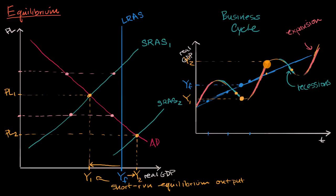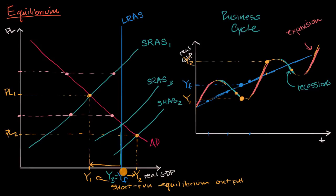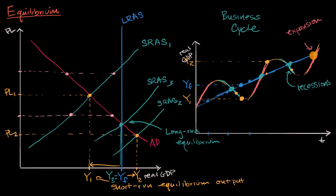There's also a third scenario where short run equilibrium output actually equals full employment output — short run aggregate supply three — where Y sub three equals our full employment output. When this happens, it is considered a long run equilibrium. Points corresponding to long run equilibria on the business cycle would be where real GDP sits exactly on the full employment curve. In future videos, we will think about how aggregate demand and short run aggregate supply will shift and connect further to the cycles in the business cycle.